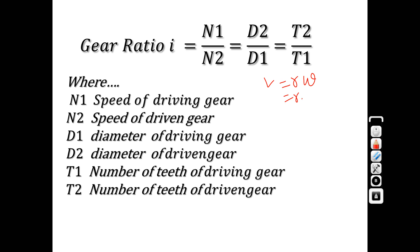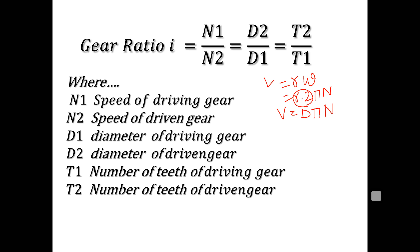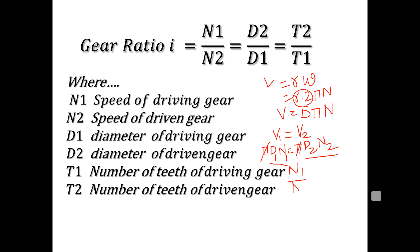Here ω = 2πn, where n is in rpm and 2r is the diameter, so linear velocity V = π·d·n. When two gears are in contact, the tangential velocity at the contact point is constant. So V₁ = V₂, giving π·d₁·n₁ = π·d₂·n₂, which simplifies to n₁·d₁ = n₂·d₂, and therefore n₁/n₂ = d₂/d₁.